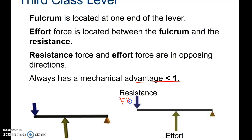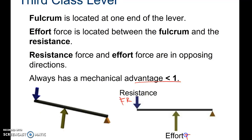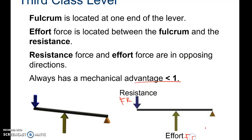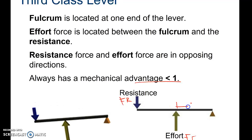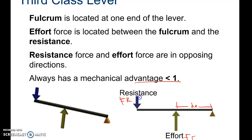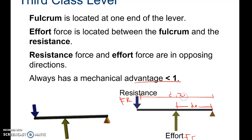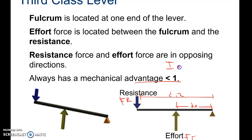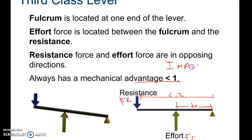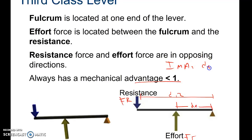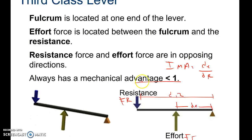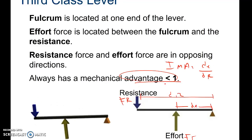A third class lever will always have a mechanical advantage less than one. If this is our force resistance and this is our force effort, our DE will always be less than our DR. So since IMA is defined as DE over DR, you can see how you'll always have a mechanical advantage less than one.